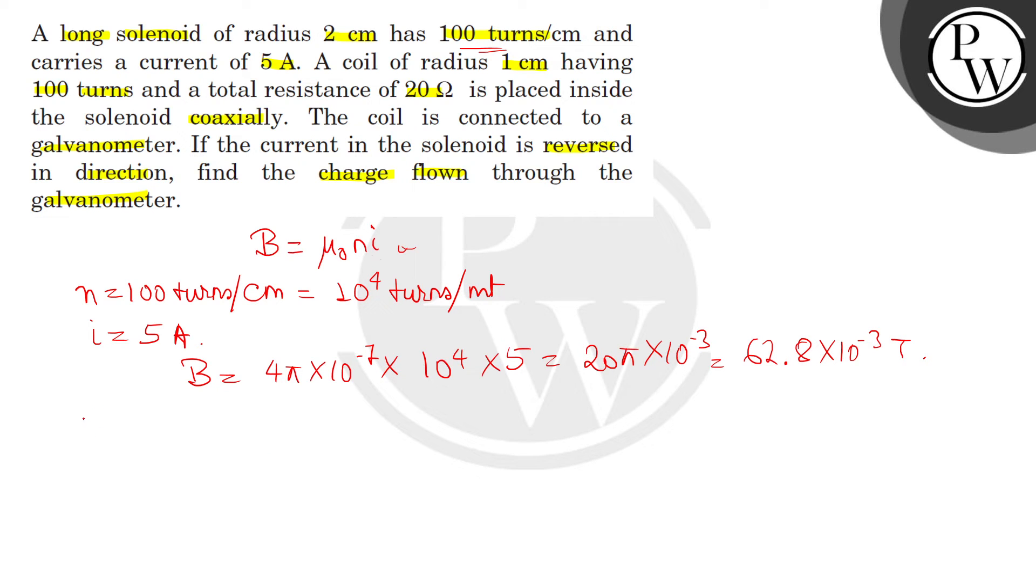Now for the second coil, we have number of turns N₂ equals 100 turns. The radius of the second coil equals 10⁻² meter and resistance R equals 20 ohm.